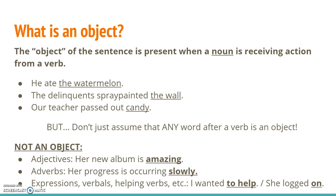So what's the object of a sentence? If we already know what the subject and the predicate are in a sentence, the object is the next piece to add in. The object of the sentence is present when a noun is receiving action from the verb or from the predicate. For example, in the sentence 'he ate the watermelon,' he is the subject, ate is my predicate verb, and the watermelon is my object. What's being eaten? The watermelon is — it's receiving the action of eating.